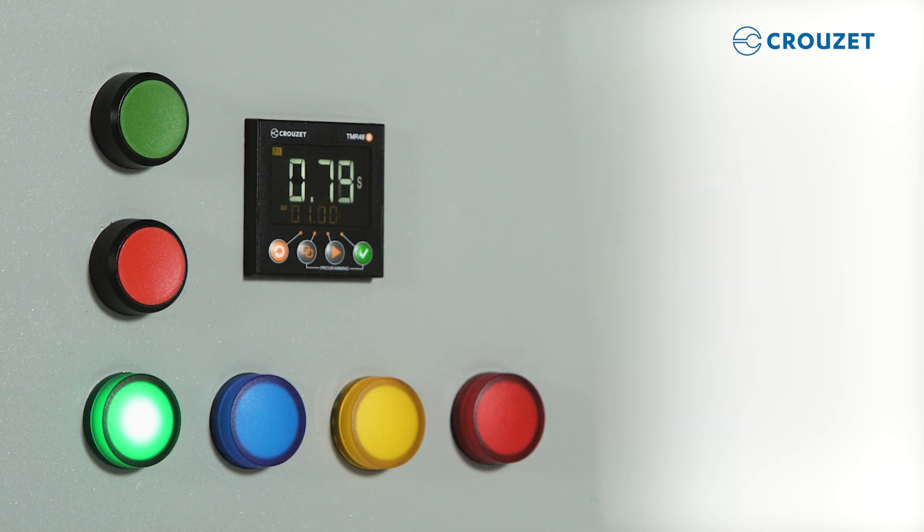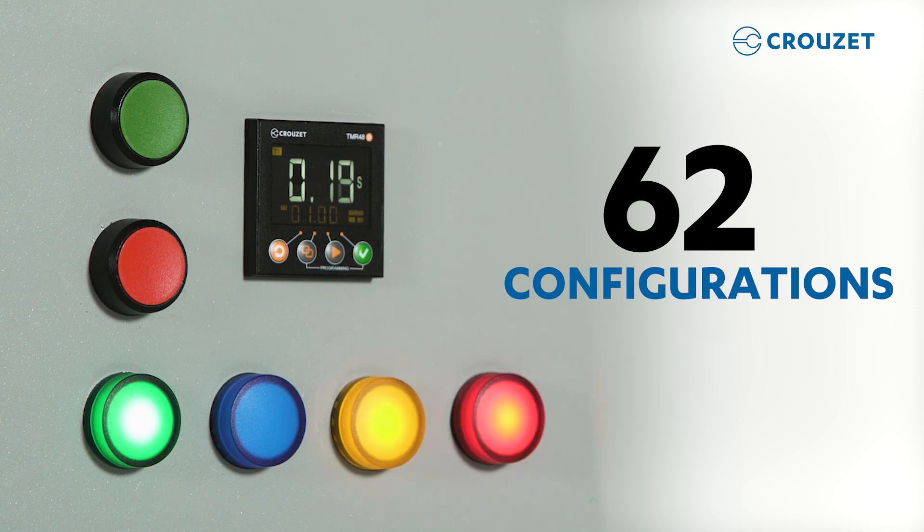The one we're talking about today, the Sierra Line Front Panel Digital Timer, offers 16 base functions with extra parameters that gives you up to 62 configurations.